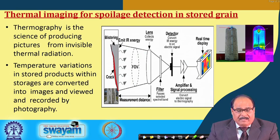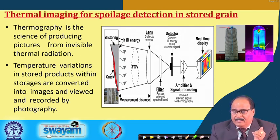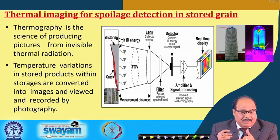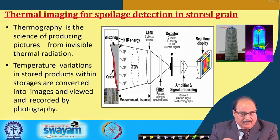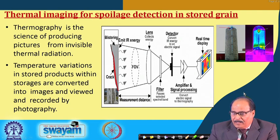Thermal imaging for spoilage detection in stored grain is another upcoming and important technology, now practiced by some agencies — thermography. By taking images of grain materials affected by temperature changes, thermography produces pictures from invisible thermal radiation. Temperature variations in stored products or their storage environment are converted into images and recorded by photography, clearly showing differences in temperature.